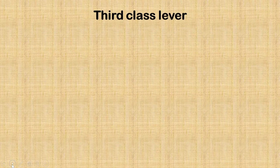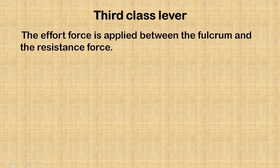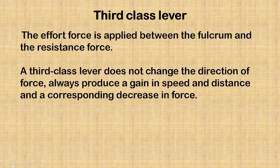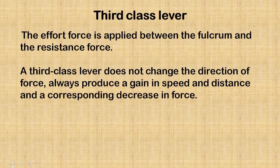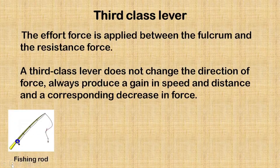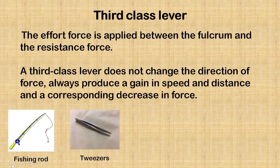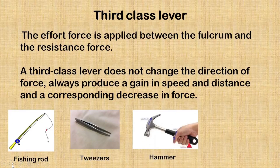The third-class lever. The effort force is applied between the fulcrum and the resistance force. A third-class lever does not change the direction of force. It always produces a gain in speed and distance and a corresponding decrease in force. Examples include fishing rod, tweezers, hammer, and shovel.